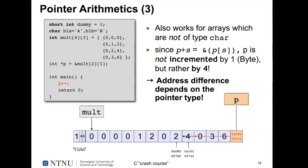If you point to a structure of 500 bytes and increment that pointer by 1, your pointer increases by 500, pointing to the memory address immediately after that structure. This makes sense semantically but is a common source of errors that many students encountered in this exercise.